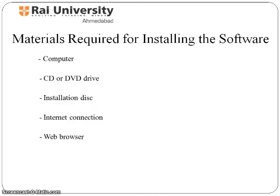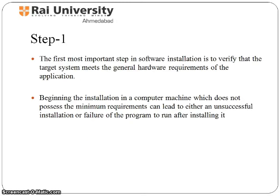Before moving further, let us get the knowledge of things required to install software. One major material needed is a laptop or system on which you need to install the software. A CD or DVD drive can hold different software programs and can be used to share and exchange application programs. An internet connection is important in cases where application software is to be downloaded through a website, where a large number of software programs are available. The very first and most important step in software installation is to verify that the target system meets the general hardware requirements of the application.